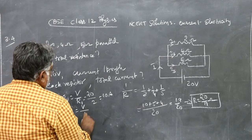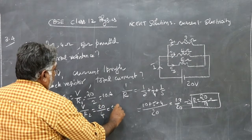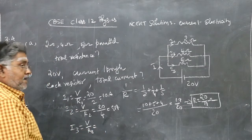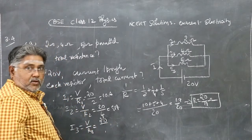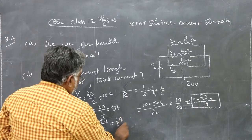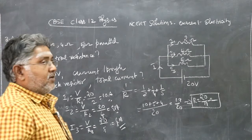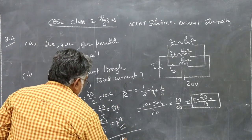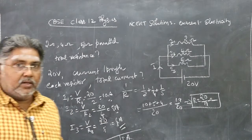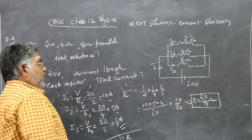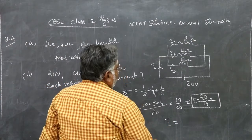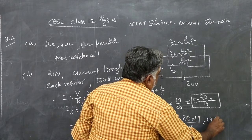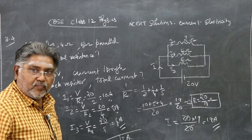I2 = V/R2 = 20/4 = 5 ampere. I3 = V/R3 = 20/5 = 4 ampere. Total current: 10 + 5 + 4 = 19 ampere. You can cross-check: I = V/R_effective = 20 ÷ (20/19) = 19 ampere. Both match, confirming the answers.